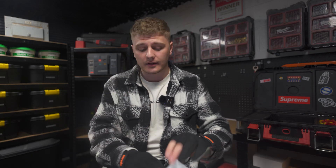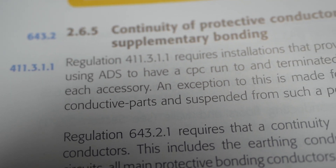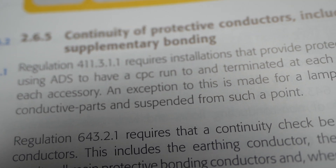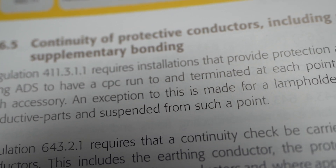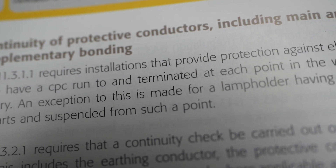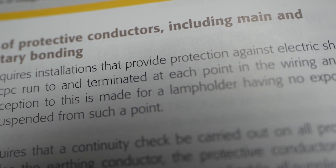As electricians, the regulations require us to do two things. The first thing is regulation 411.3.1.1, which requires that installations provide protection against electric shock using ADS, and that you have a CPC run to and terminated at each point in the wiring and at each accessory. An exception is made for a lamp holder having no exposed conductive parts. So basically, you need to take an earth to every junction, every point, every accessory of a circuit.